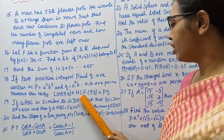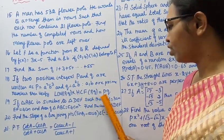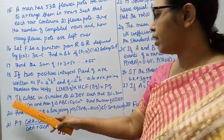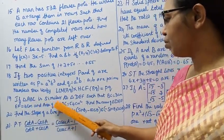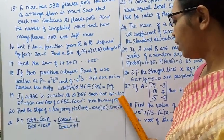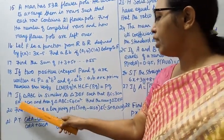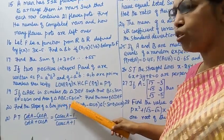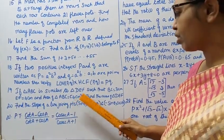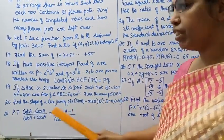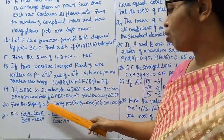Question 19: If triangle ABC is similar to triangle DEF such that BC = 3 cm, EF = 4 cm, and area of triangle ABC = 54 cm², find the area of triangle DEF. Question 20: Find the slope of a line joining points (sin θ, -cos θ) and (-sin θ, cos θ).